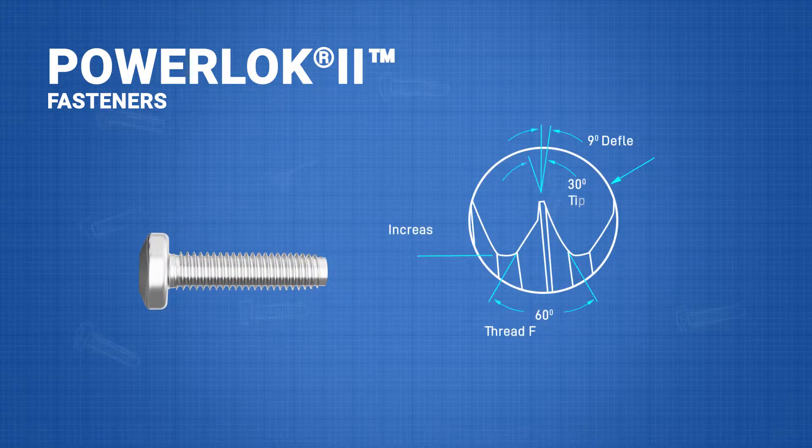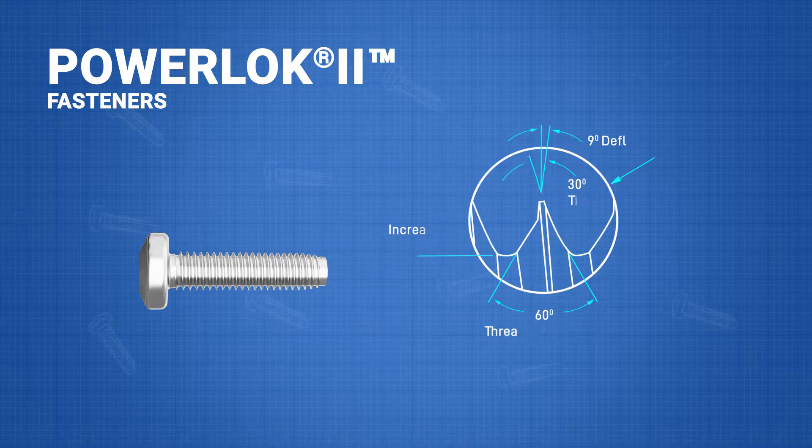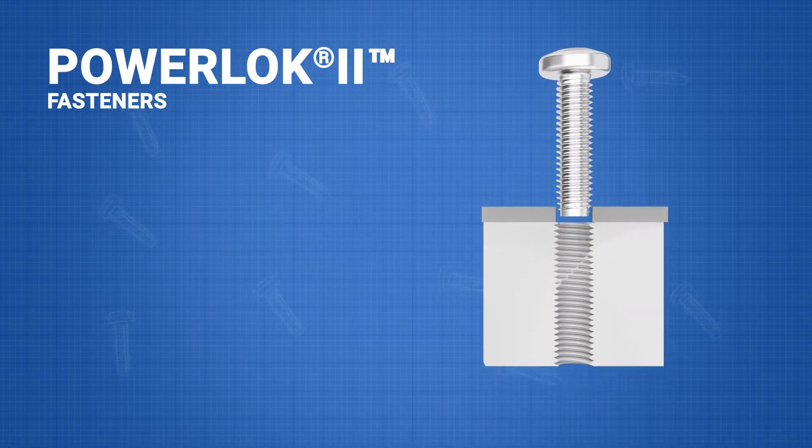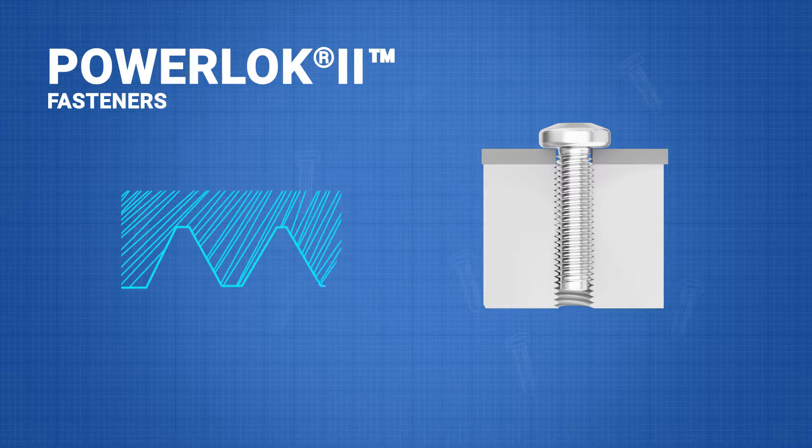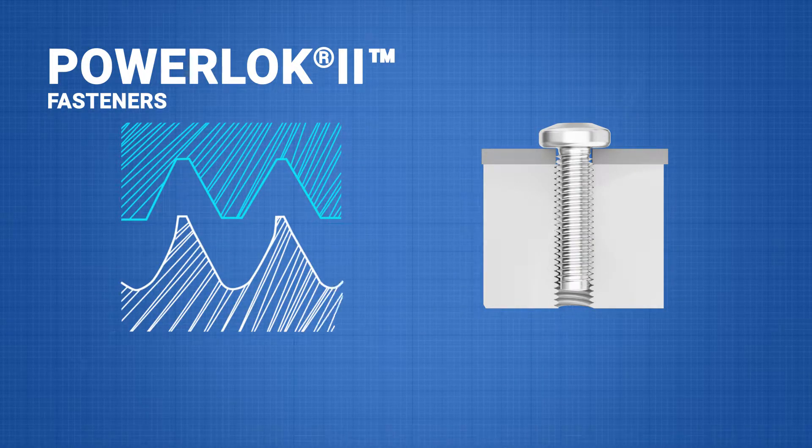The PowerLock 2 is the newest PowerLock design. PowerLock 2 screws obtain their locking action in two separate ways. First, interference in the root of the nut thread. Second, spring action from tip deflection.